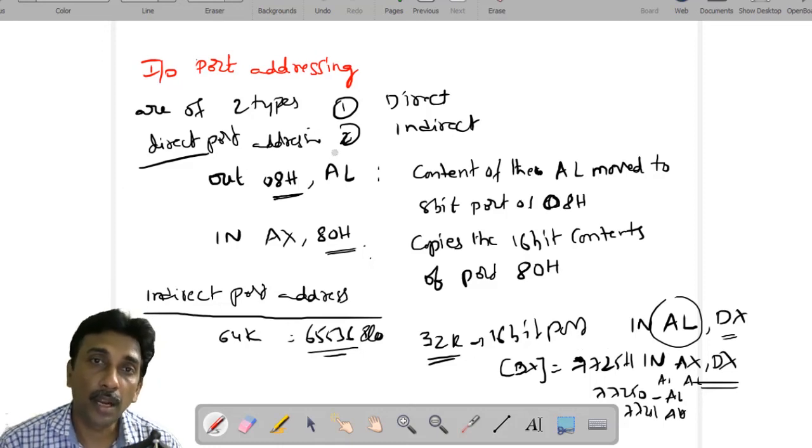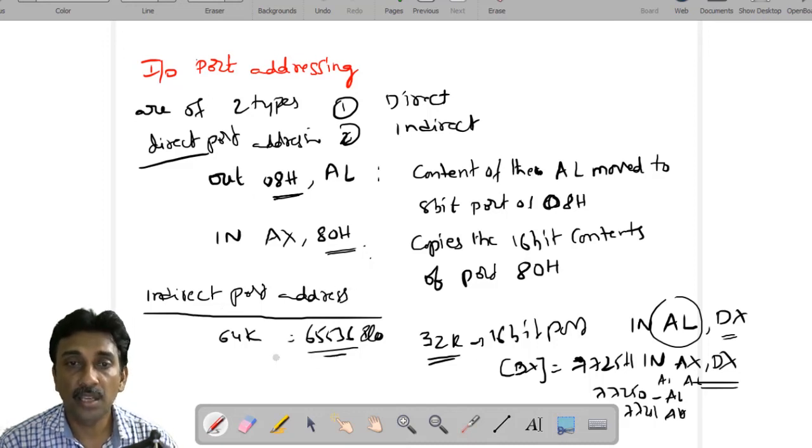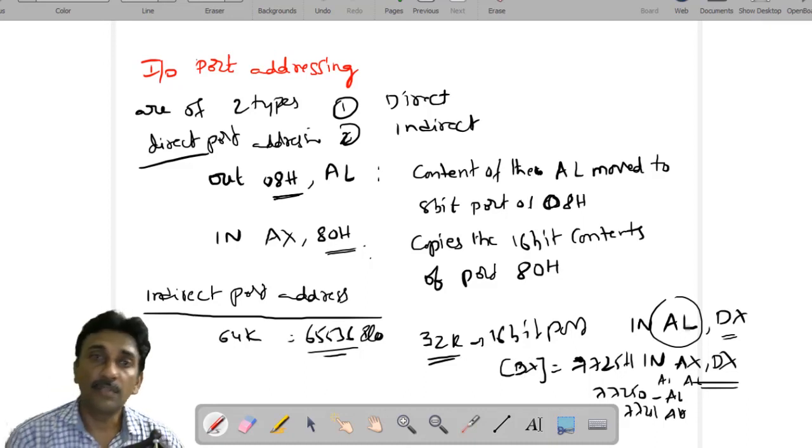So in I/O port addressing, there are two types of addressing modes: one is direct port addressing and indirect addressing port. In direct addressing port, you can use the direct value like 8H. Through the 8H port address, you can send the data and you can get the data in the form of IN and OUT. In indirect port addressing, we are using the DX register, particularly in memory mapped I/O. For 8-bit, 64K bytes of memory will be used. For 16-bit data, 32K bytes of memory can be used. Via the DX, we can send the data and receive the data. That means the DX is the port. This way, I/O port addressing is going to be done.